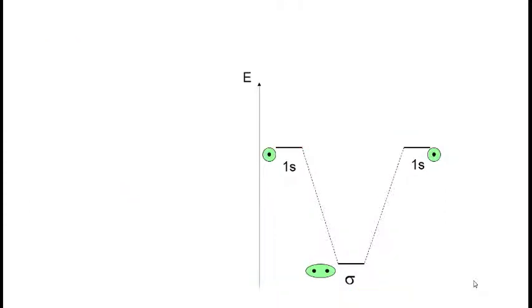But we're only halfway there. We also have to add the energy of the sigma-antibonding orbital. Remember that antibonding orbitals are at higher energy than the atomic orbitals from which they came, so the full diagram will look like this, again with the bonding orbital at lower energy and the antibonding orbital at higher energy.